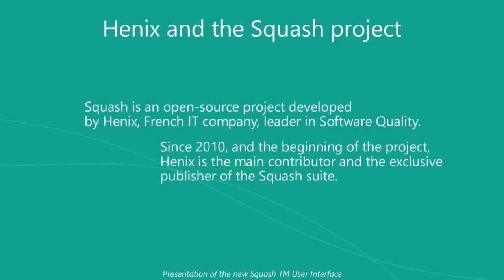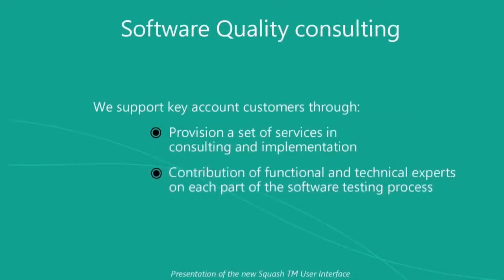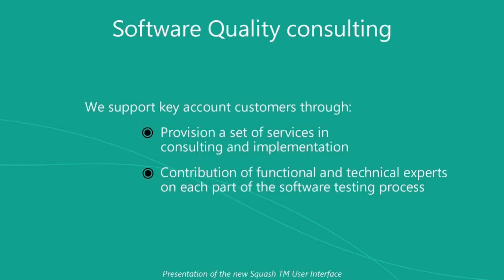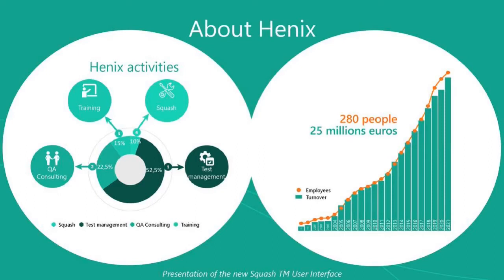I'll begin with the presentation of Enix, which is the company publishing Squash — an open source project developed by Enix since 2010. Enix remains the main contributor and exclusive publisher of the Squash suite, which includes several modules I'll present shortly. Enix is a key company in software quality consulting, supporting key account customers through services in consulting and implementation, and providing functional and technical expertise on each part of the software testing process.